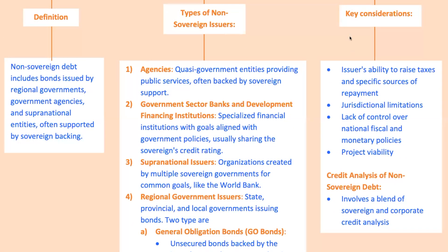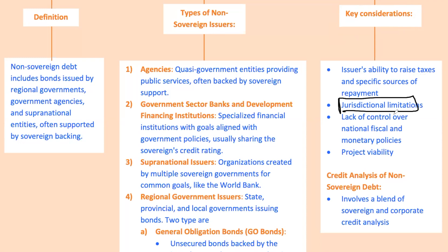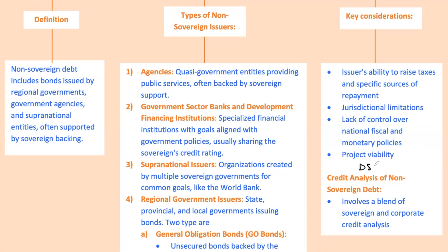When evaluating non-sovereign government debt, there are some unique considerations. Taxing authority: unlike national governments, non-sovereign issuers may have limited authority to raise taxes, impacting their ability to service debt. Jurisdictional limits: regional governments don't control national fiscal and monetary policies, so they're more vulnerable to economic swings and federal policy changes. Project viability: for revenue bonds, it's crucial to assess the project's expected cash flow and debt service coverage ratio, or DSCR. A DSCR above 1.0 indicates that project revenue should cover debt payments, which is a positive sign of creditworthiness.